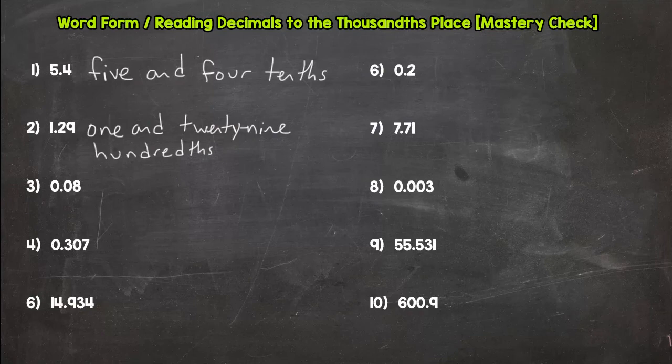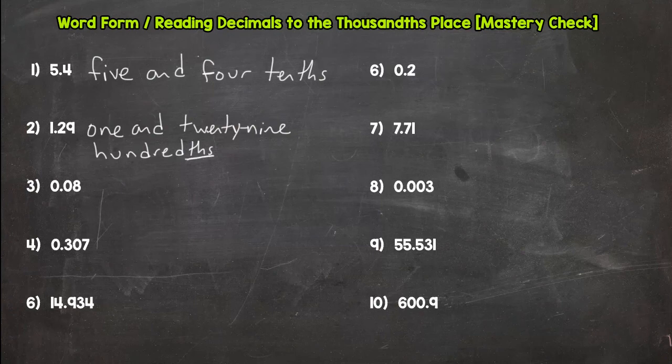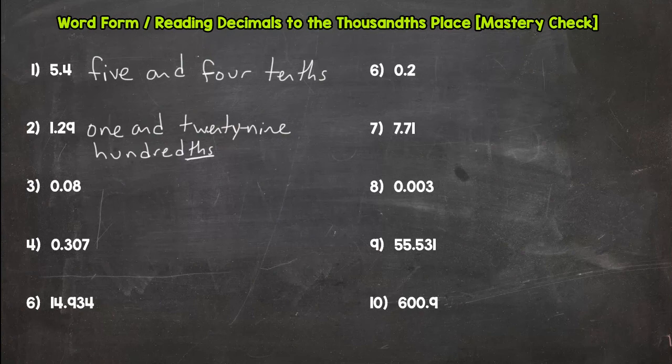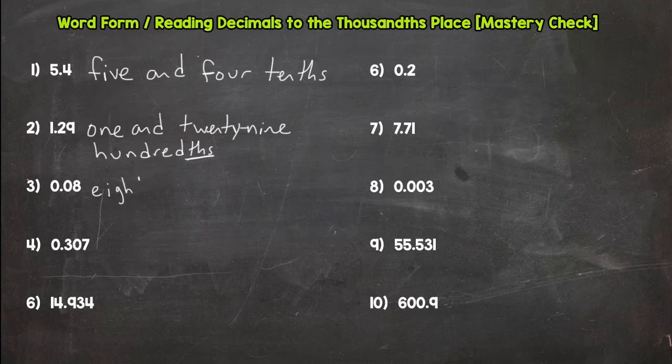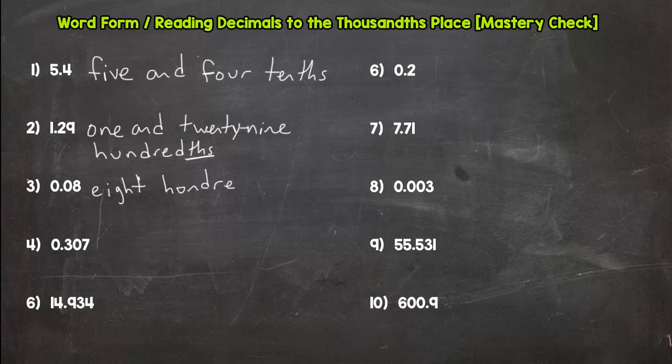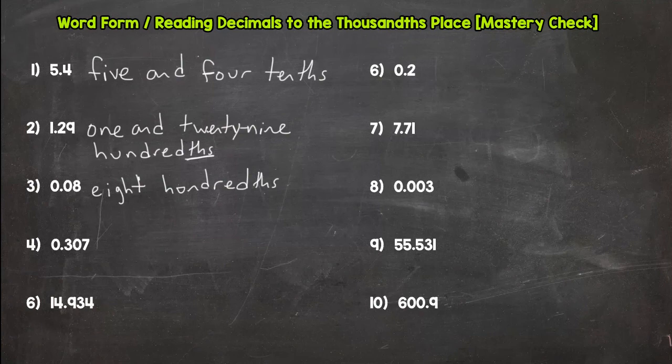Now if you have minor spelling errors as we go through these, don't worry about that, and make sure you have THS at the end of hundredths or tenths or thousandths when we are to the right of the decimal. Number three: eight hundredths. That's a short one there.